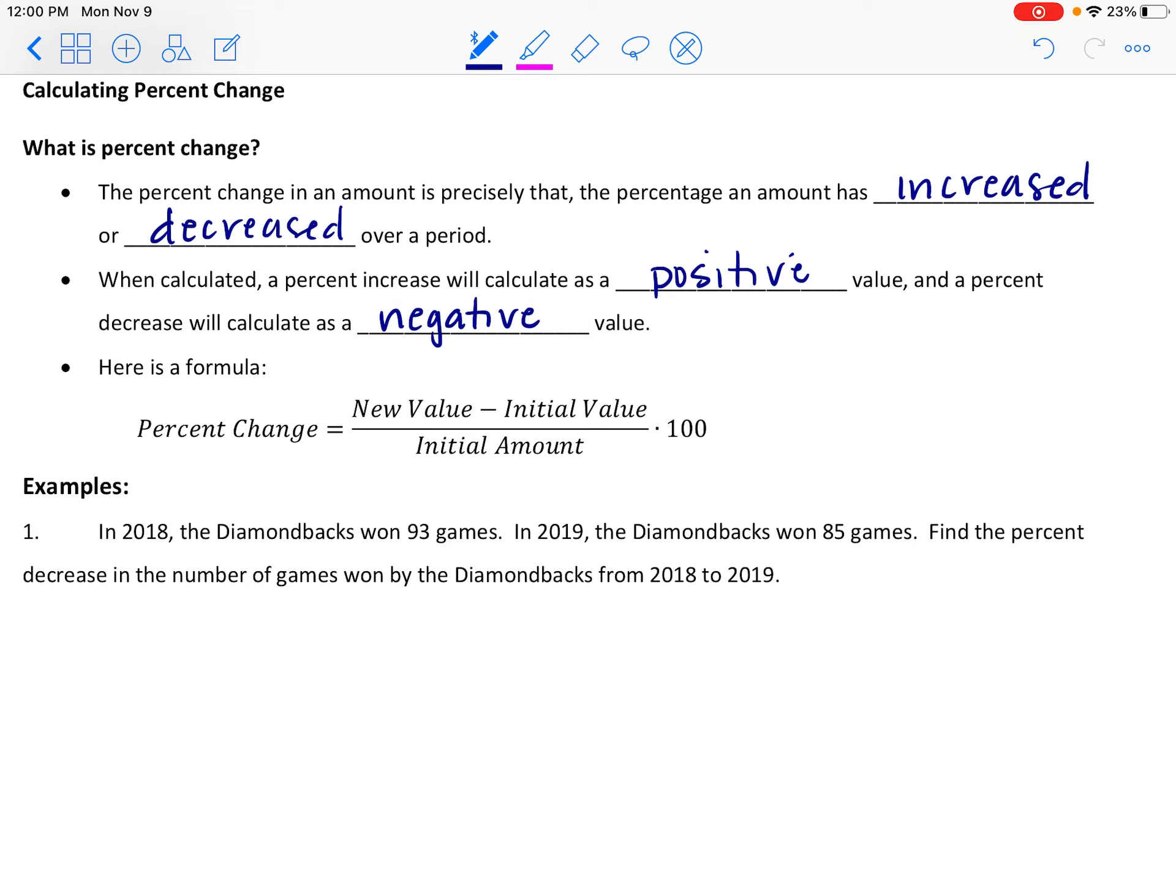And here's a formula that can be used to calculate our percent change. We have a fractional value here that's going to give us some decimal amount, and then you'll notice in the formula there's a hundred out here to multiply by. That multiply by a hundred is just to take the decimal and convert it to a percent. The fractional value is the important piece here.